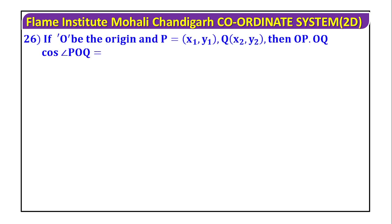If O be the origin and P(x1, y1), Q(x2, y2), then OP into OQ into cos(angle POQ) is...